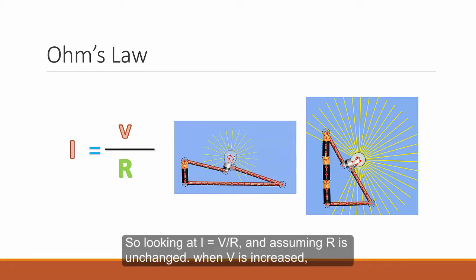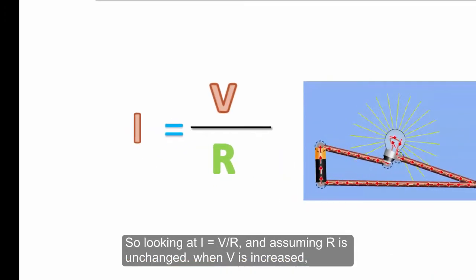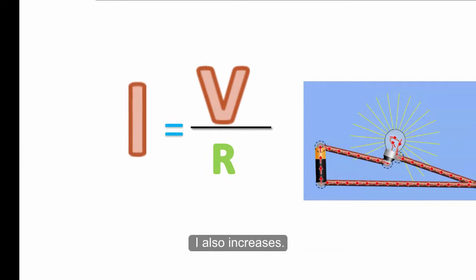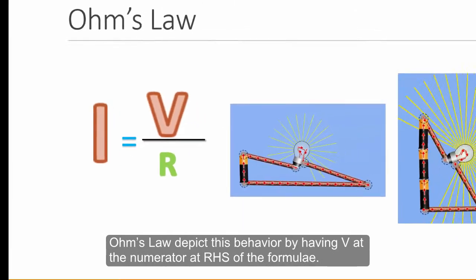And so looking at I equals V over R, and assuming that R is unchanged, when V is increased, I is also increased, and they are linearly related. So Ohm's Law depicts this behavior by having V at the numerator at the right hand side of the formula.